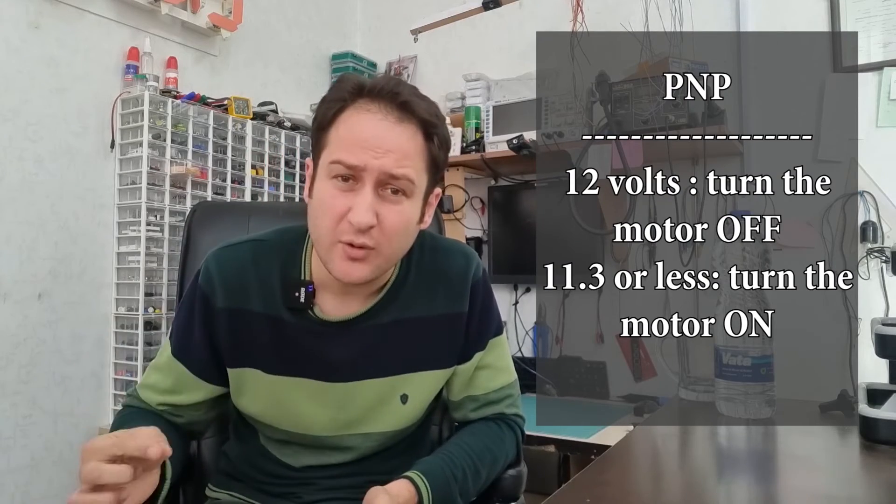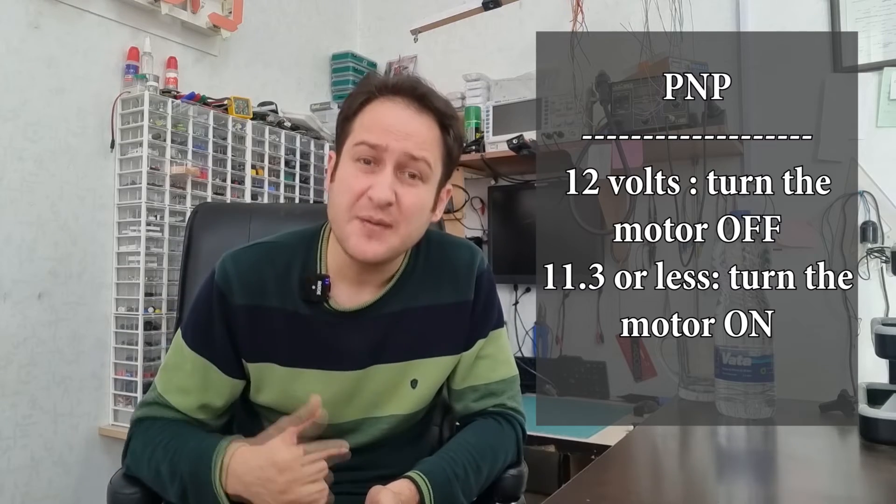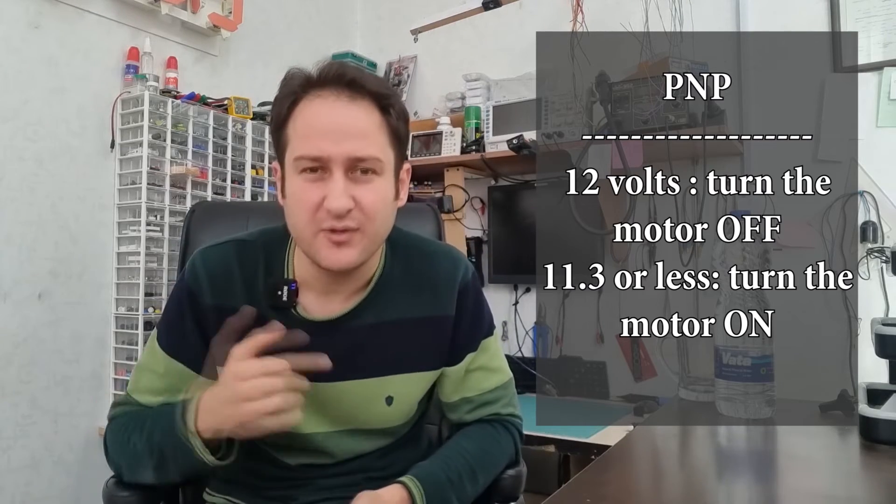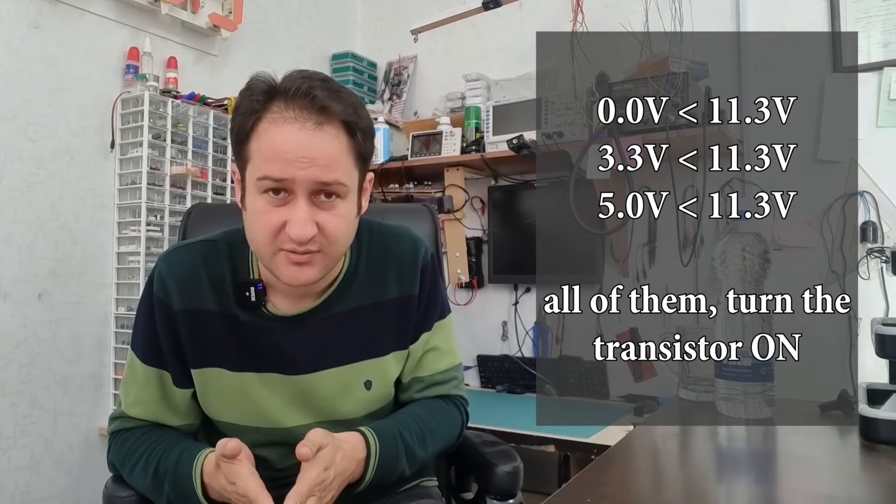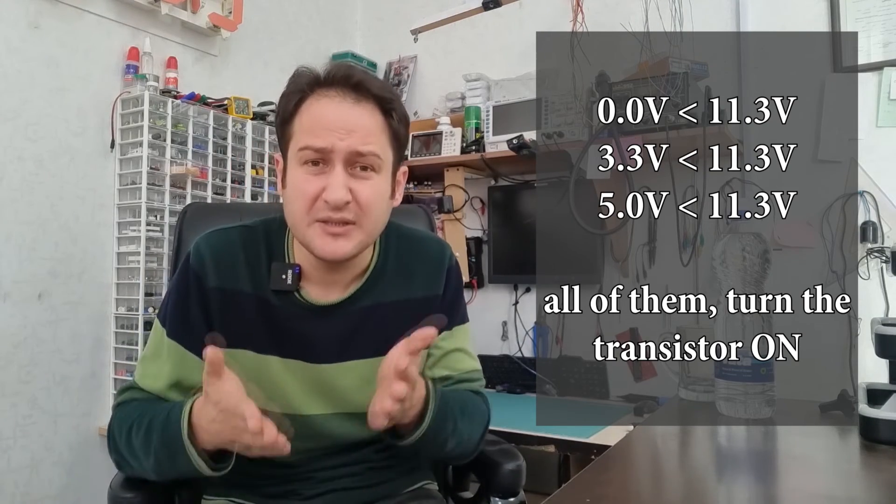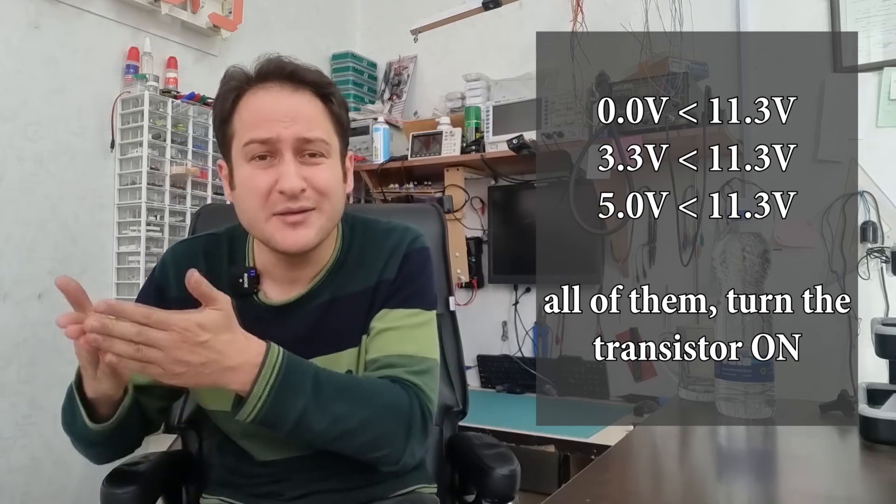But if you try to switch the motor using PNP type transistors, I have bad news for you. Because the transistor will turn on with 11.3 volts or less and will turn off with the base voltage over than 11.3 volts. You can't turn the transistor off using microcontroller and of course you can't stop the DC motor. Because MCU pins can provide 0 and 3.3 volts or sometimes 5 volts, which all of these voltages are under 11.3 volts, and all of these voltages will turn the transistor and then turn the motor on.